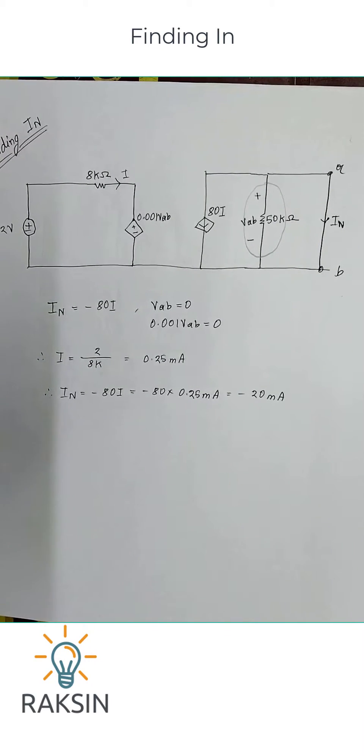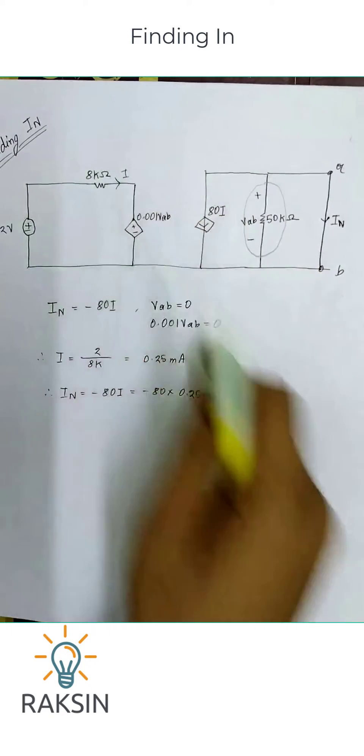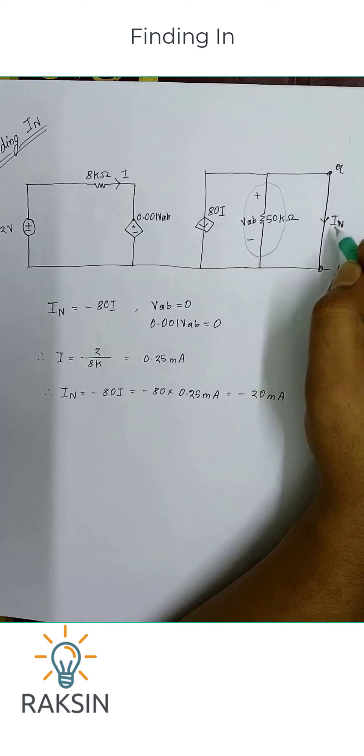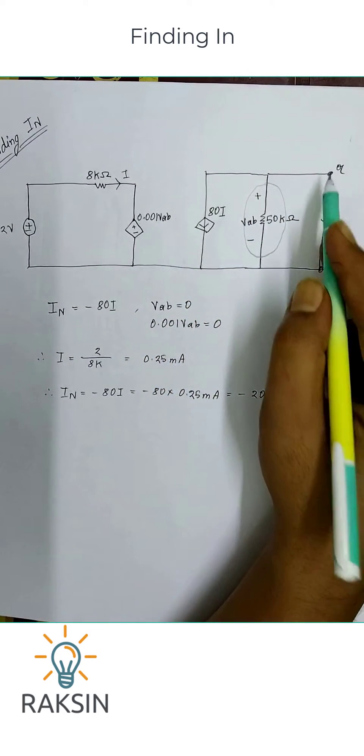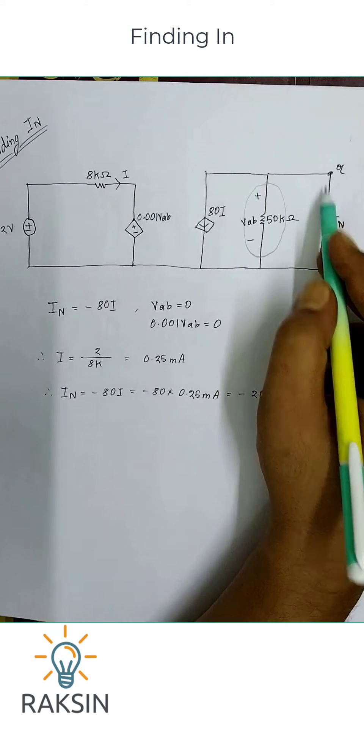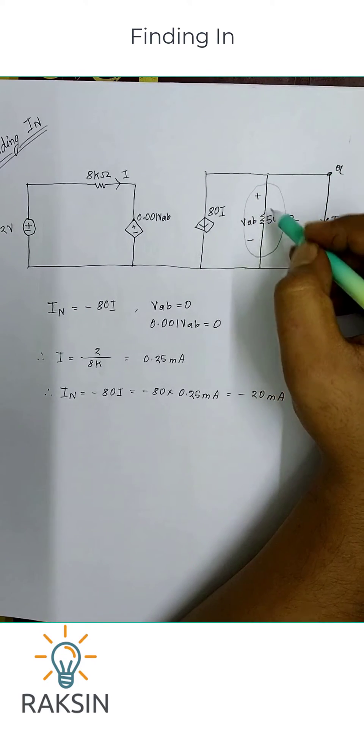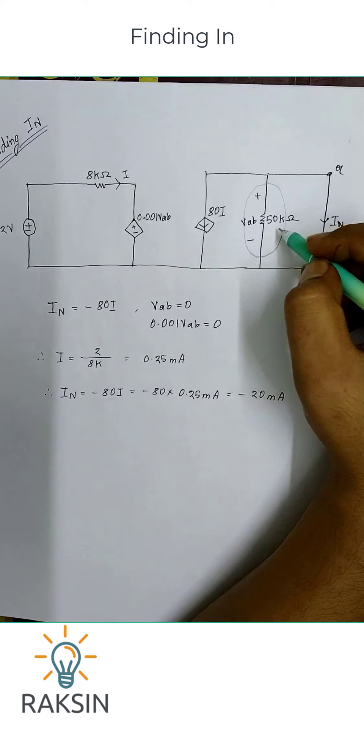Now we will find out In. This circuit is actually the given circuit in the equation. We have just shorted this line, and this is In. So we can see this line is shorted and at this point the voltage is 0, so we don't need to count this 50 kilo ohm resistance.